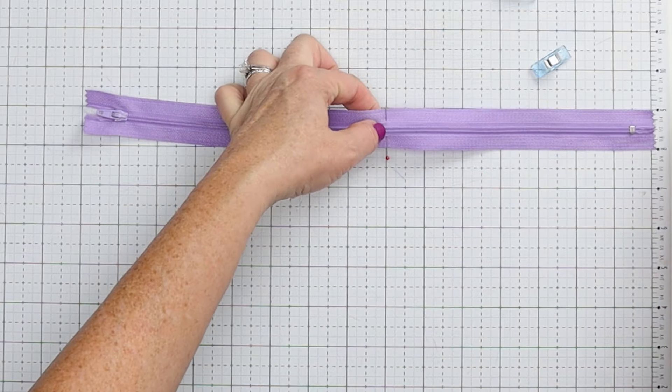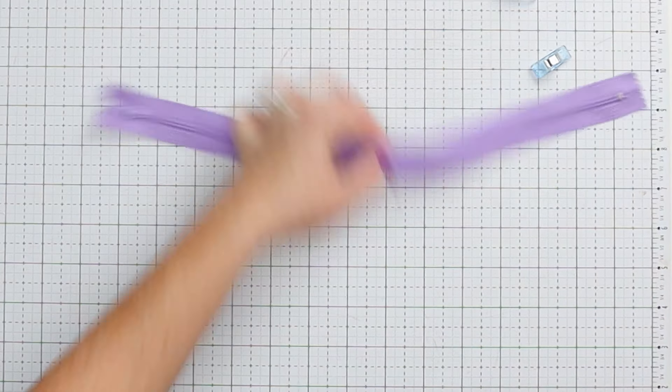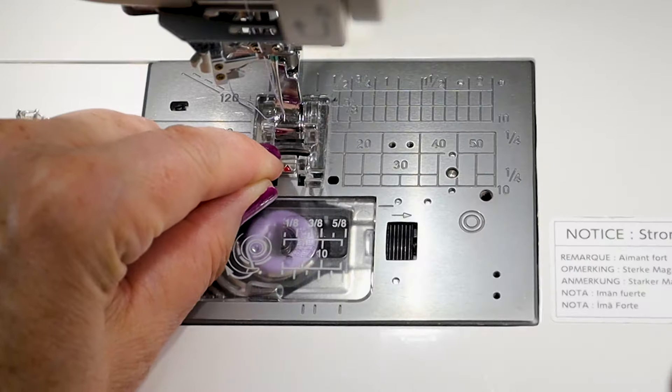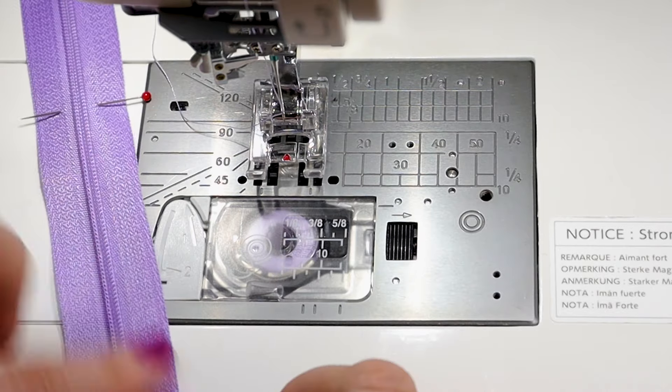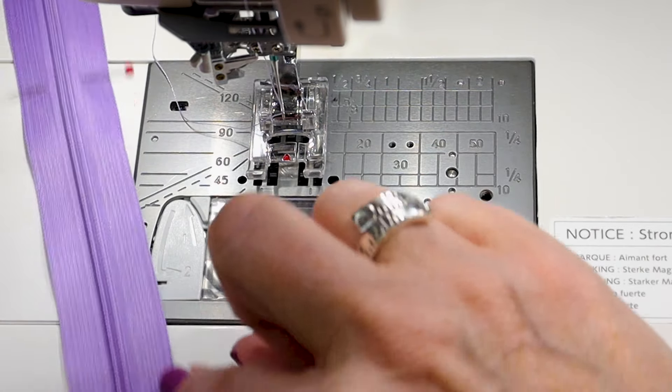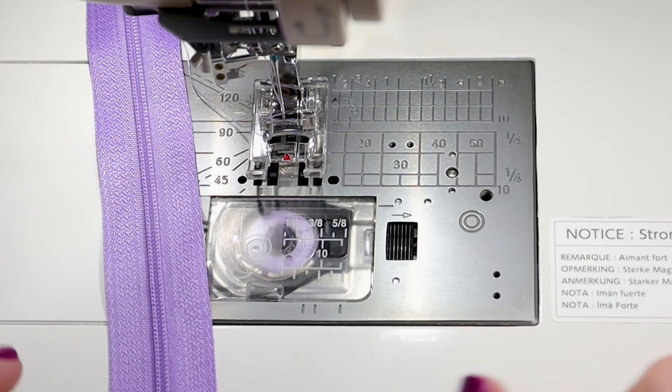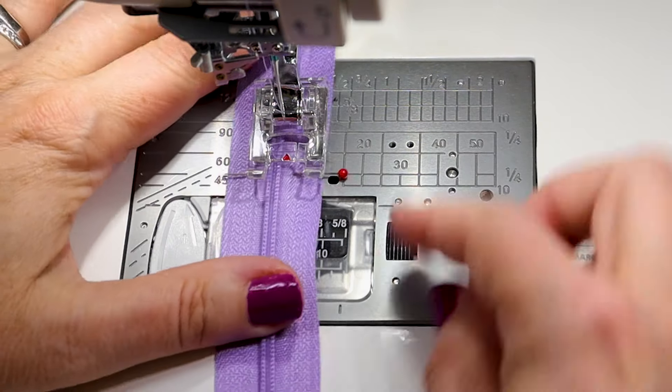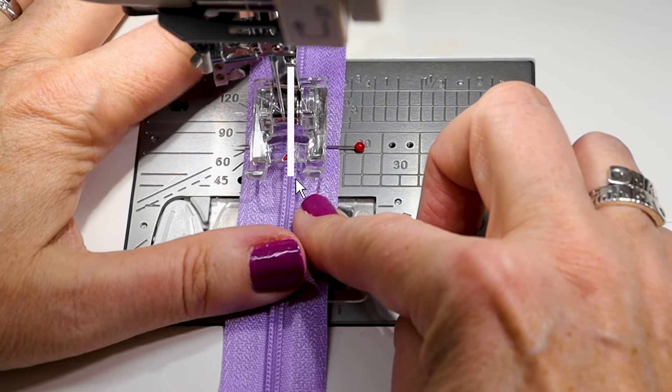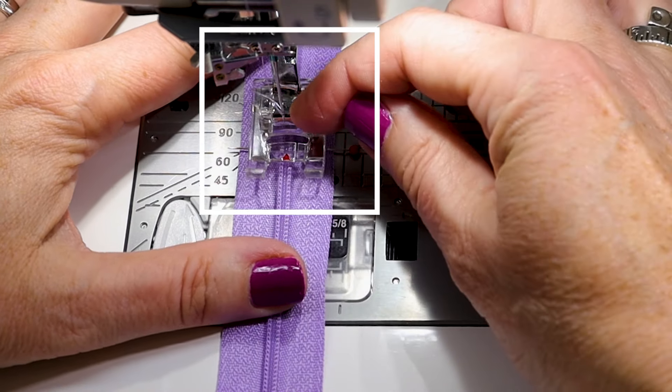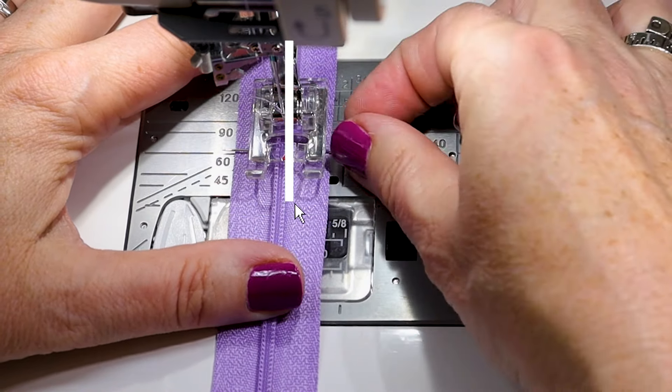And now we are just going to put our foot and do a little zigzag. I do recommend that you use thread that matches your zipper because then when you're sewing the edges, you want to sew really close to the edge. And if you aren't perfect but your thread matches, you're not really going to notice. So I would highly recommend that. Now what I do is I leave the zipper in and I put it under the foot so that I can see the needle is pretty much over top of the zipper.